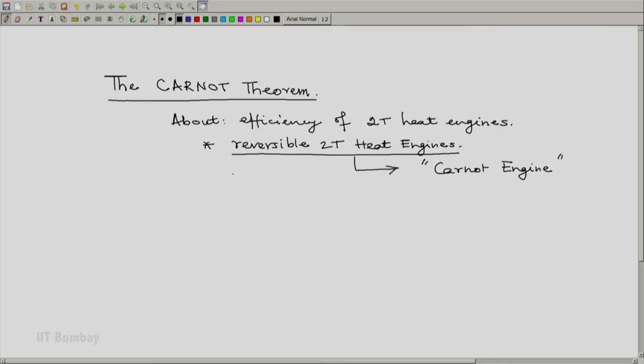The Carnot theorem compares the efficiency of any 2T heat engine with a comparable reversible 2T heat engine. What is this theorem about? Let us sketch a figure to appreciate what the theorem is about before proving it.